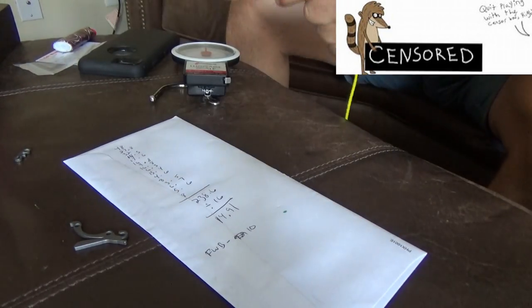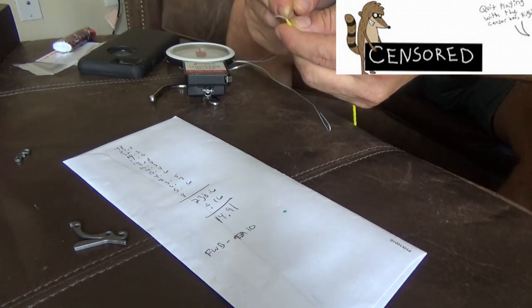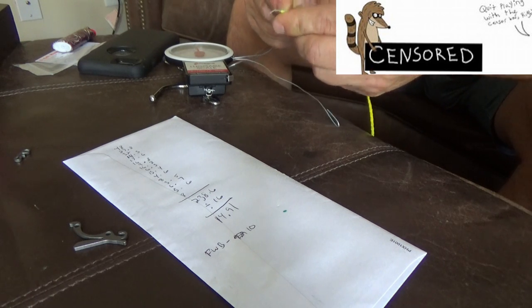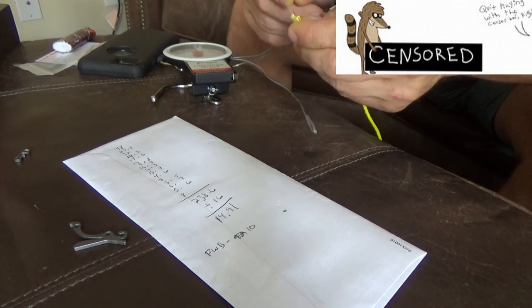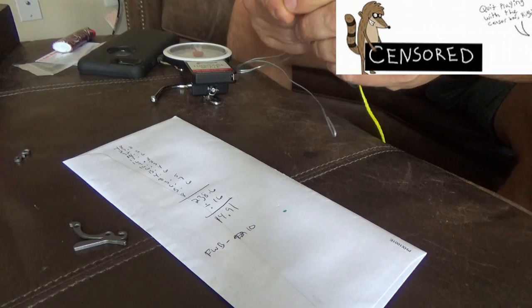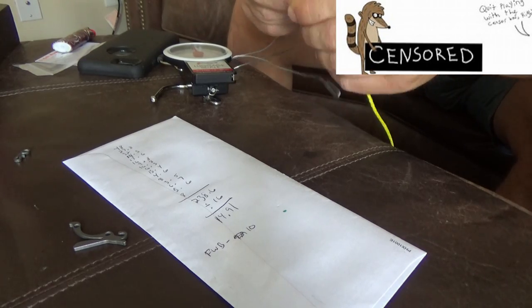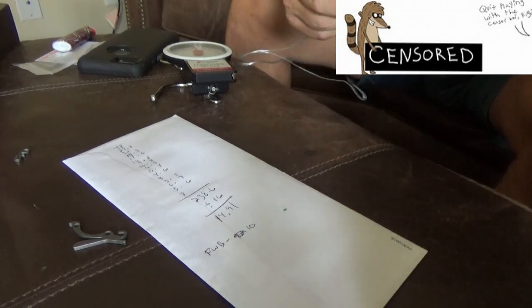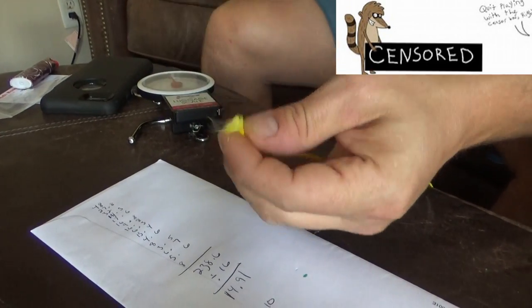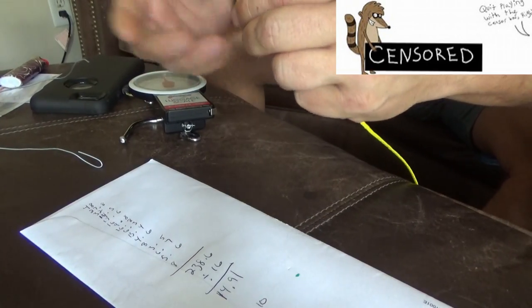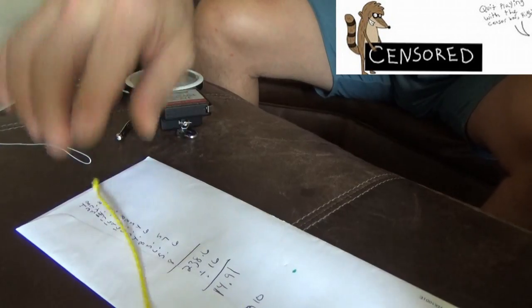Basically I need to first fray the end or whatever they call it, get the end tattered. You want to make sure that you pull the pieces of line away from each other. So we did that. Usually you want to do about an inch. I think I do mine about a half an inch.